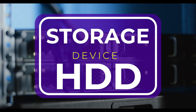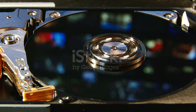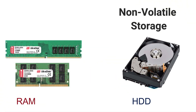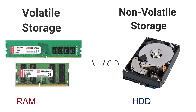Storage devices are those devices that are used for storing data, and we have different types of storage devices used for computer systems. The first storage type is volatile versus non-volatile storage. Volatile storage does not keep data permanently — we lose the data when the system is restarted. Non-volatile storage keeps the data permanently even if the system is restarted. Examples: volatile storage like RAM, and non-volatile storage like hard disk drives.